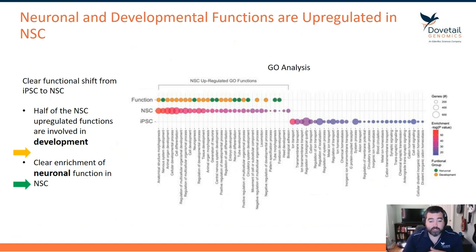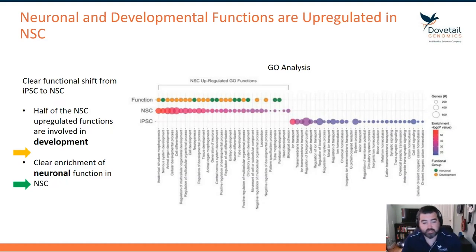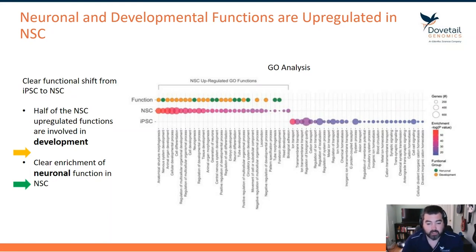The first thing we're going to do is look at the RNA-seq and see what the regulatory landscape looks like between these two cells. What we have here is a GO analysis of the RNA-seq data showing differential expression between the NSC and iPSC, with columns colored to reflect whether they are developmental or neuronal functions.